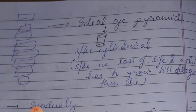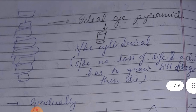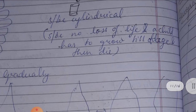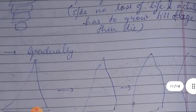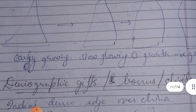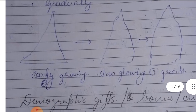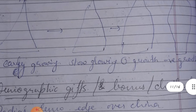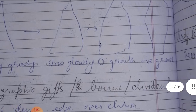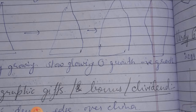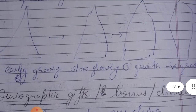The ideal age pyramid is a cylindrical shape, representing a theoretical situation where there is no loss of life and every child grows to old age. This shows zero population growth, positive growth, and negative growth patterns.